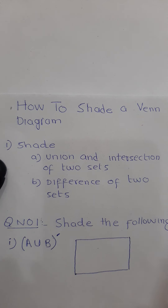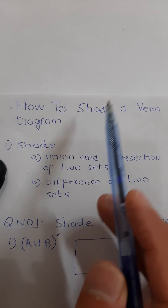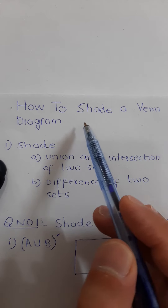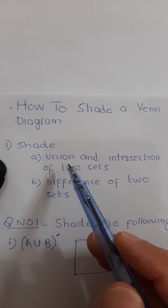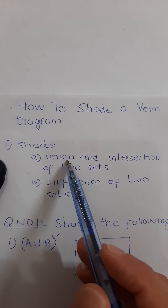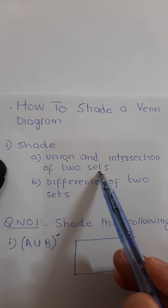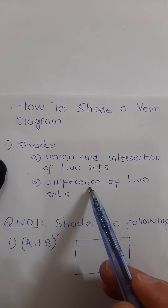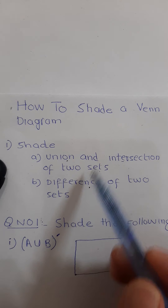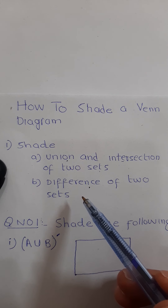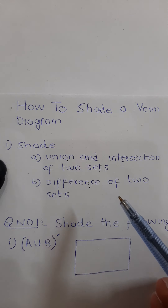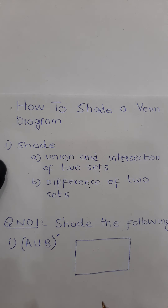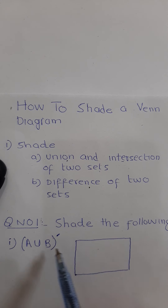In this video, we are going to discuss some difficult or complicated cases of shading a Venn diagram. We are going to shade union and intersection of two sets in a Venn diagram, and some cases from difference of two sets. I will be attempting some questions that are a bit difficult, so just for the sake of guidance, I am going to solve these questions.